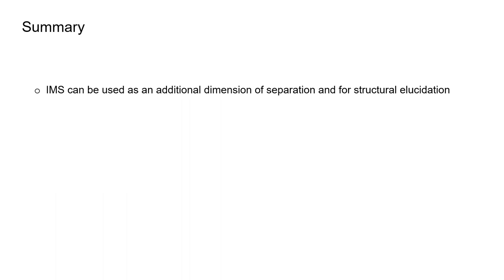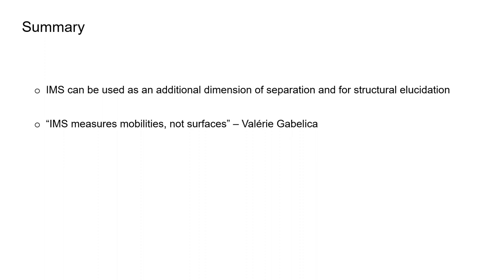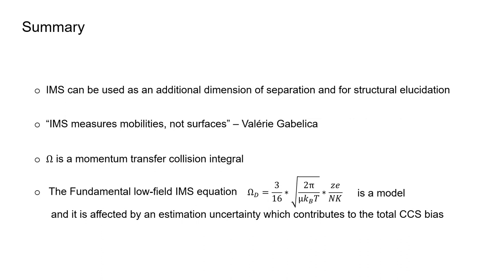To summarize: ion mobility can be used as an additional dimension of separation, well-fitted between the chromatography and mass spectrometry time frame. To use the words of Valerie Gabelica: ion mobility measures mobilities, not surfaces. We need to be careful — we are not measuring collision cross-sections; we are measuring arrival times from which we subsequently derive a momentum transfer collision integral, conventionally called CCS and defined in Ångström-squared, which is related to the projection cross-section but is not the same thing.